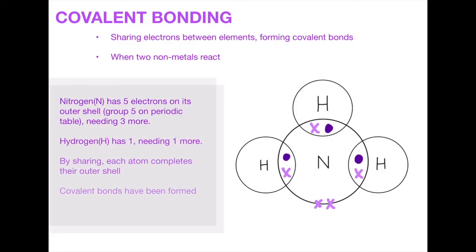Next we have covalent bonding. The difference compared to ionic bonding is that they share the electrons rather than transferring them. Here we have an example of NH₃: nitrogen has five electrons, as it's in group five on the periodic table, and hydrogen is in group one with one outer shell electron. Because hydrogen's one outer shell electron is on its first layer, it can't just lose that electron — it has to get two in total to complete its first layer. By connecting up with the nitrogen, the nitrogen can now have eight on its outer shell so it's complete, and the hydrogens each will have two. This forms covalent bonds between each of those atoms.